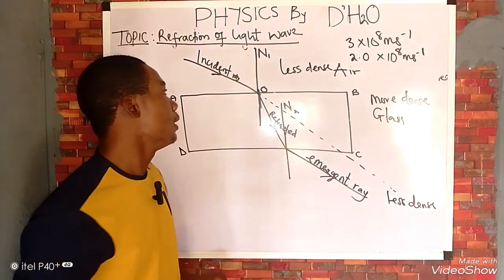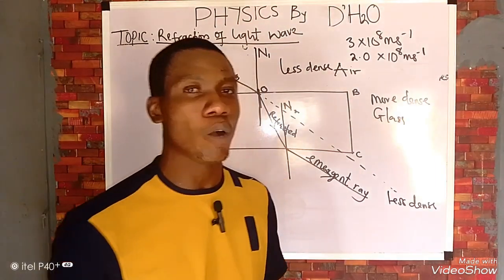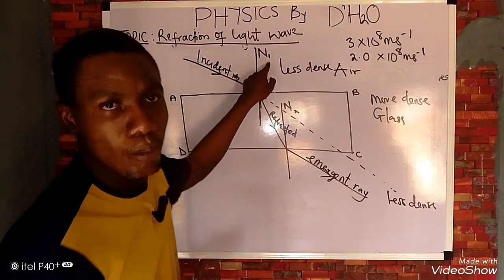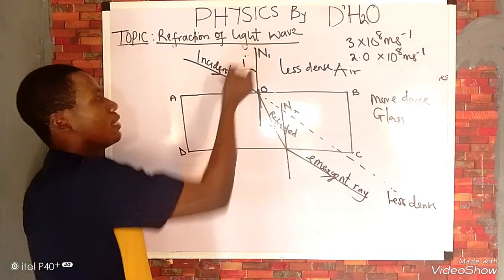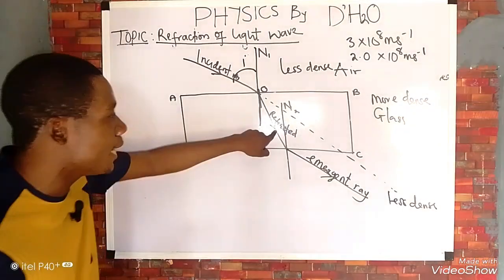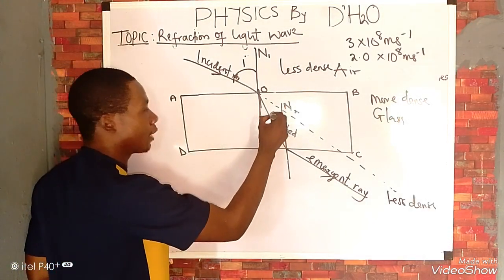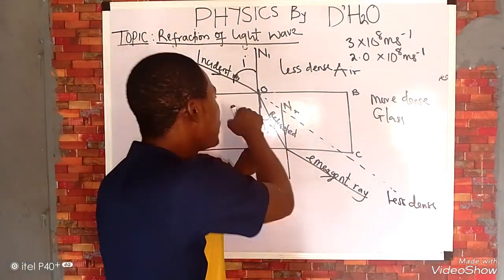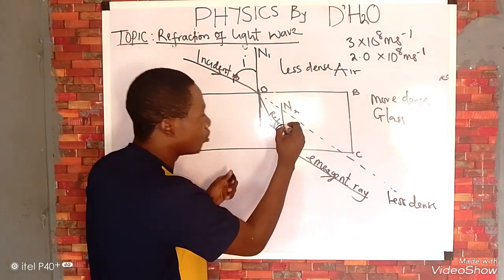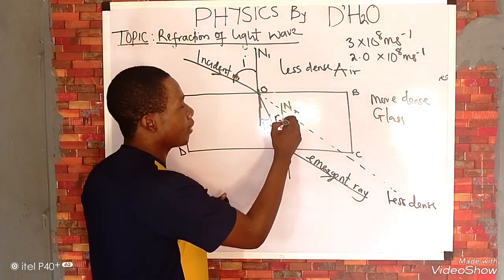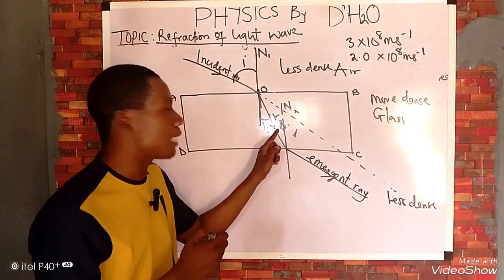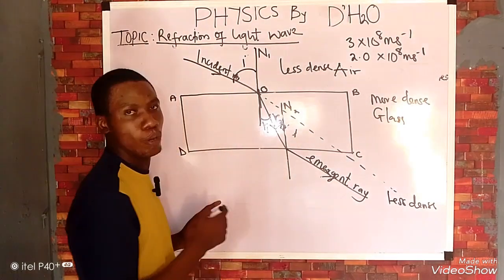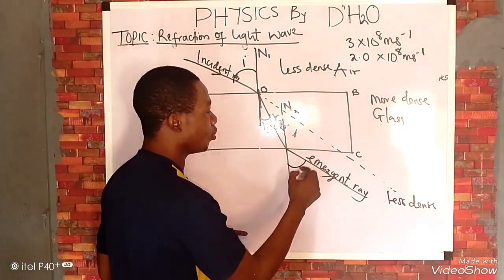We also need to know our angle of incidence, angle of refraction, and angle of emergence. The angle between the incident ray and the normal is the angle of incidence (I). The angle between the refracted ray and the normal is the angle of refraction — labeled r1 at the first interface and r2 at the second interface. The angle between the emergent ray and the normal is called the angle of emergence.